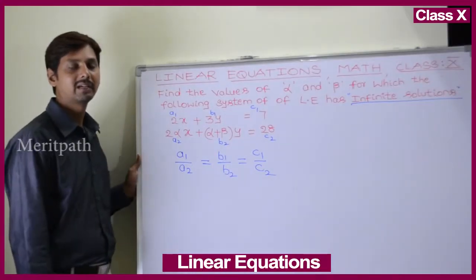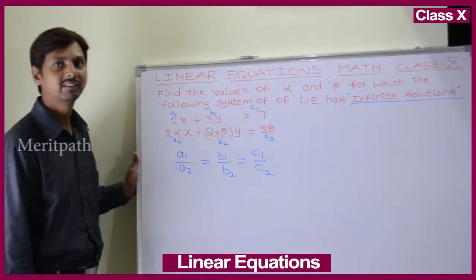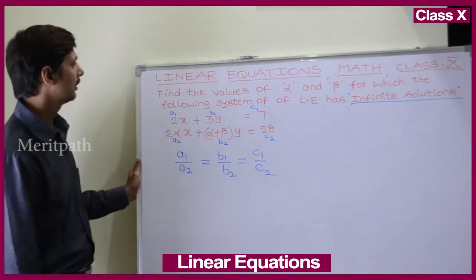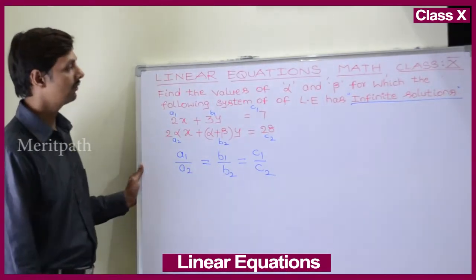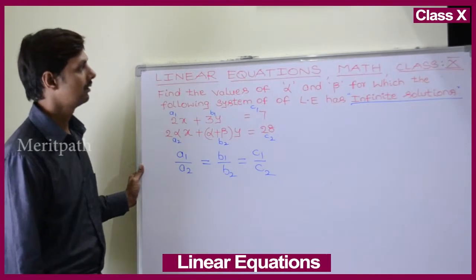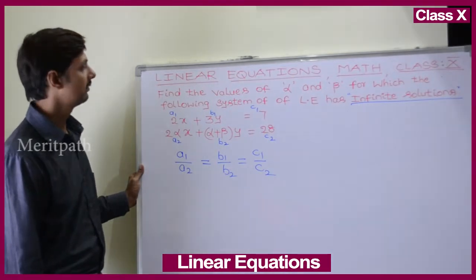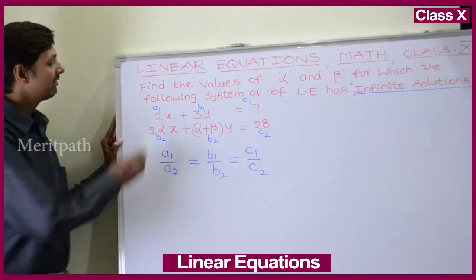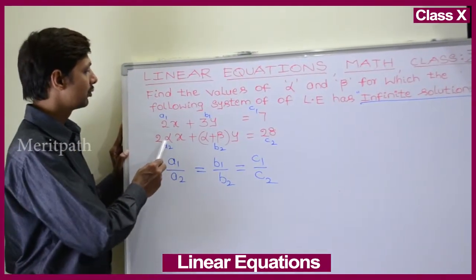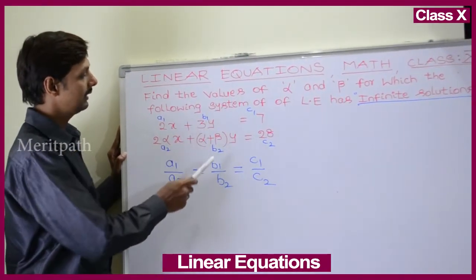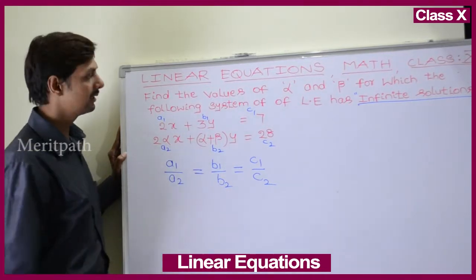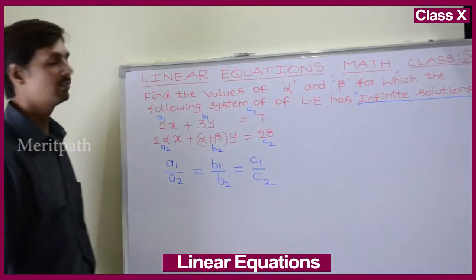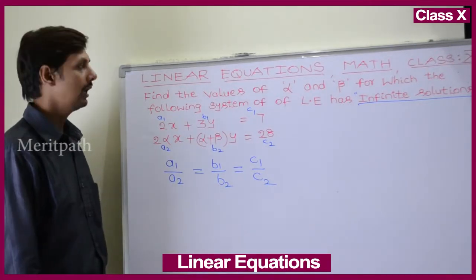Class 10 mathematics, linear equations. We have taken one problem here: find the values of alpha and beta for which the following system of linear equations has infinite solutions. a1 equals a2 equals 2 alpha, b1 equals 3, b2 equals alpha plus beta, c1 is minus 7, c2 is minus 28.